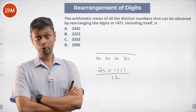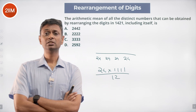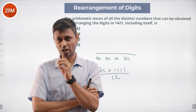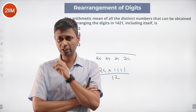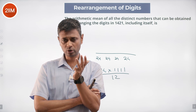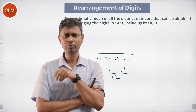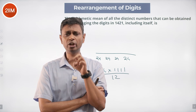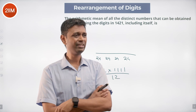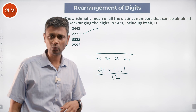The sum of all numbers in each place value is 24 — units, tens, hundreds, and thousands are all symmetric at 24. So the total sum is 24 × 1111, and dividing by 12 gives the average, which equals 2 × 1111 = 2222.